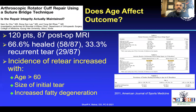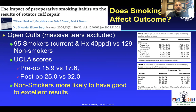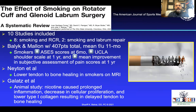Does age make a difference? One study showed that around age 60, something starts to happen that results in a slightly increased chance of re-tear — so in patients over 60, age must be factored in. Regarding smoking: multiple studies show that smokers do worse, with non-smokers more likely to have a good to excellent outcome. Smokers had decreased ASES and UCLA scores at one year and six months. Nicotine caused prolonged inflammation, decreased cellular proliferation, and lower type I collagen, resulting in delayed tendon healing.